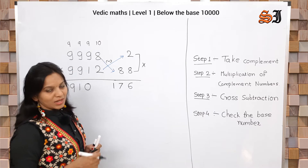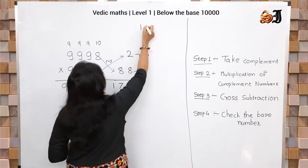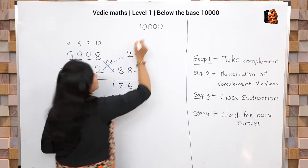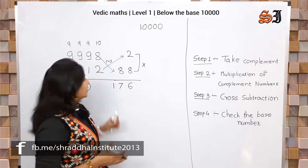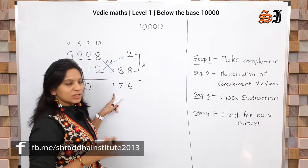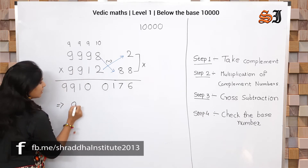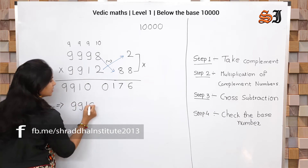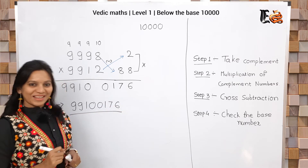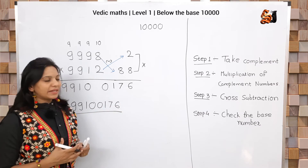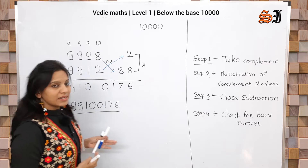Last step: check the base number. The base is 10,000, which has 4 zeros, so we need 4 numbers on the right side. The right side currently has 3 numbers, so we put a 0 here. So the answer is 99100176.